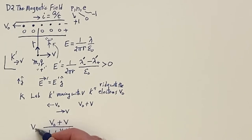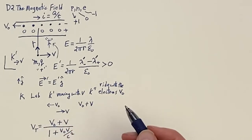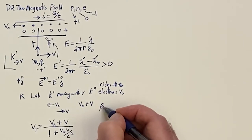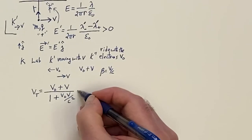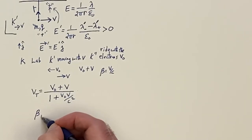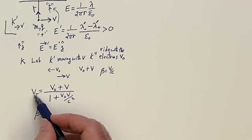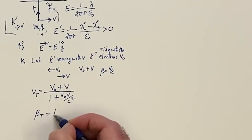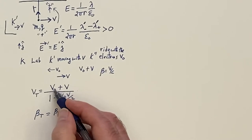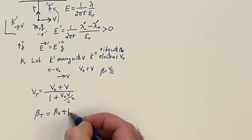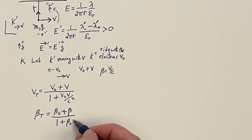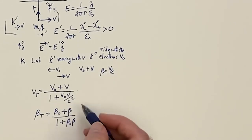We call that the total speed for the electrons, using notation beta equals V over C. Dividing by C: V T over C is beta T, V naught over C is beta naught, V over C is beta. So beta T equals beta naught plus beta over 1 plus beta naught times beta. That's the cool relationship we have.